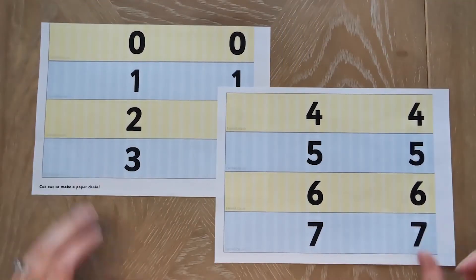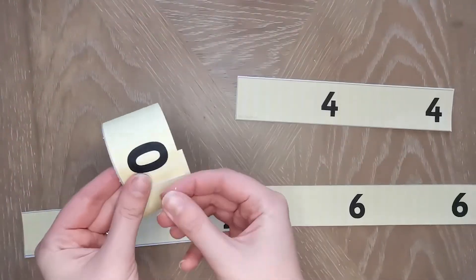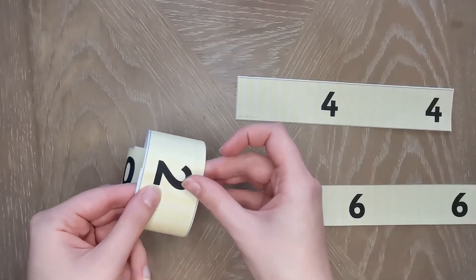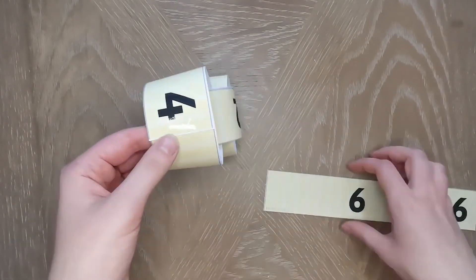This resource makes odd and even paper chains. Simply cut the strips, sort the numbers into odd and even, and link them together. This can make a great display resource to remind children of which numbers are odd and which numbers are even.